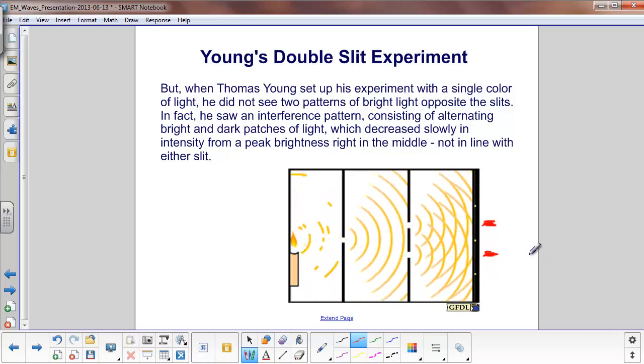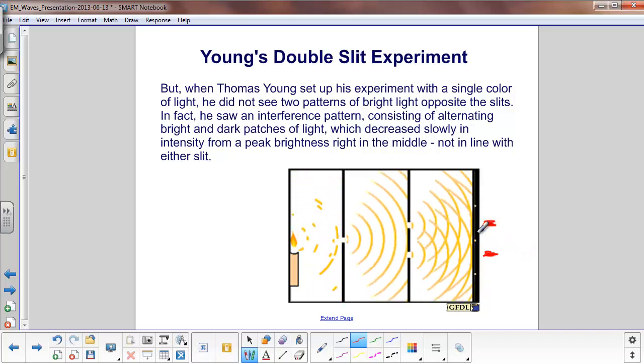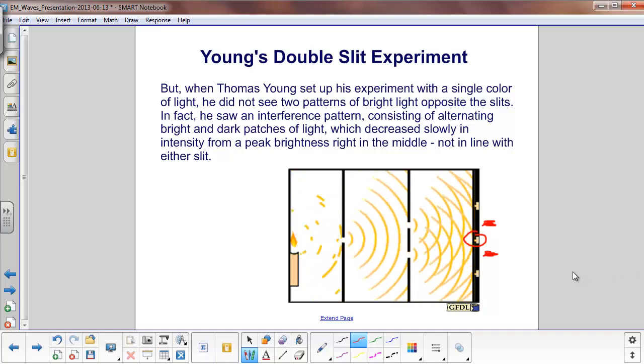But what he actually saw was an interference pattern, where there would be alternate bright and dark patches of light, which decrease slowly in intensity from the peak brightness right here in the middle. This is where the light was brightest, not even in line with these double slits. So, the physical experiment did not back up the prediction.